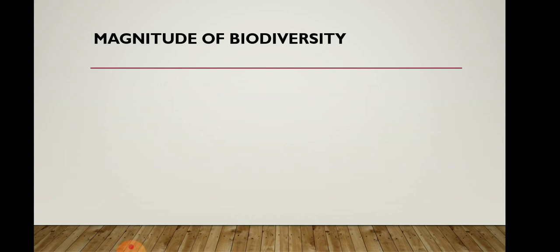More than 70 percent of all species recorded are animals. Plants comprise no more than 22 percent of the total. So in terms of recorded species, animals dominate while plants account for around 22 percent of the total species present on Earth's surface.